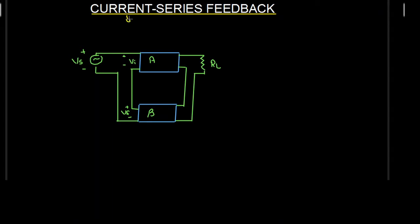The first term indicates the sampling, and sampling always takes place at the output side. So at the output side we are going to have a current because we have current sampling. The second term indicates the mixing, and we have mixing at the input side. This series mixing is also called voltage mixing because voltages are added or subtracted in series. So on the input side the input signal is going to be voltage.